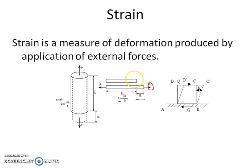This strain is called linear strain — the ratio of change in length to original length. Similarly, if there is a compressive force, there will be a reduction in the length of the member, and this is called compressive strain. When a member is subjected to tensile force P, there is an increase in length but a decrease in diameter — this is lateral strain. Lateral strain is defined as the change in lateral dimension per unit lateral dimension.